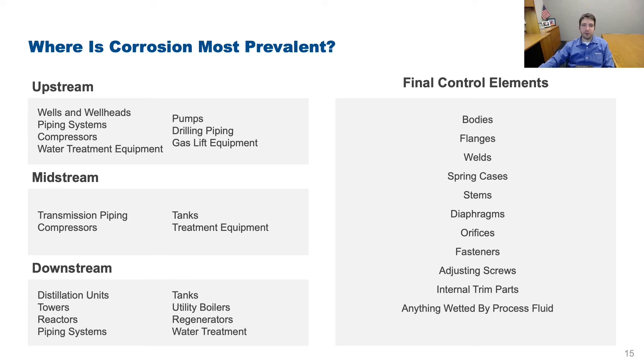As it pertains to final control elements, examples of parts which may be susceptible to corrosive process fluid include bodies, welds, fasteners, internal trim parts, and others.